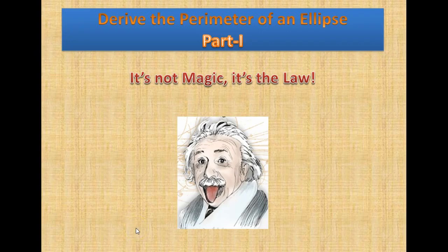Okay, this is part one. In this part one, we will derive the perimeter of an ellipse. Now, at this point, the equation for the perimeter of a circle — we know what that is. That's 2 pi times the radius. But the equation for the perimeter of an ellipse, we don't know what that is. So we're going to derive that.